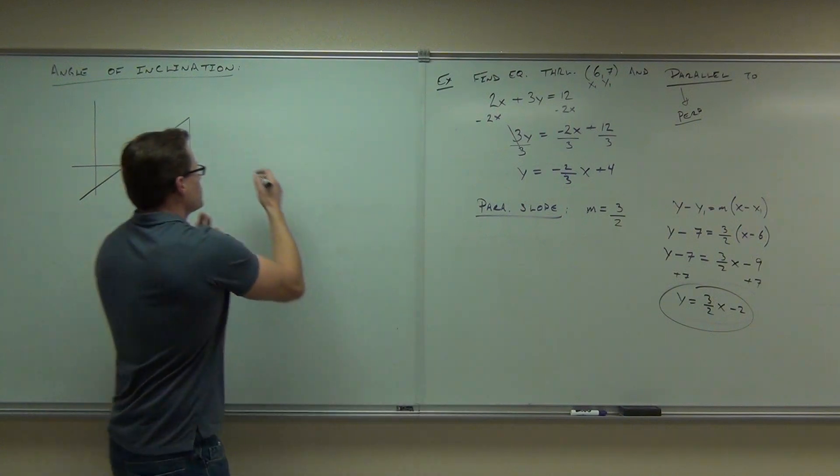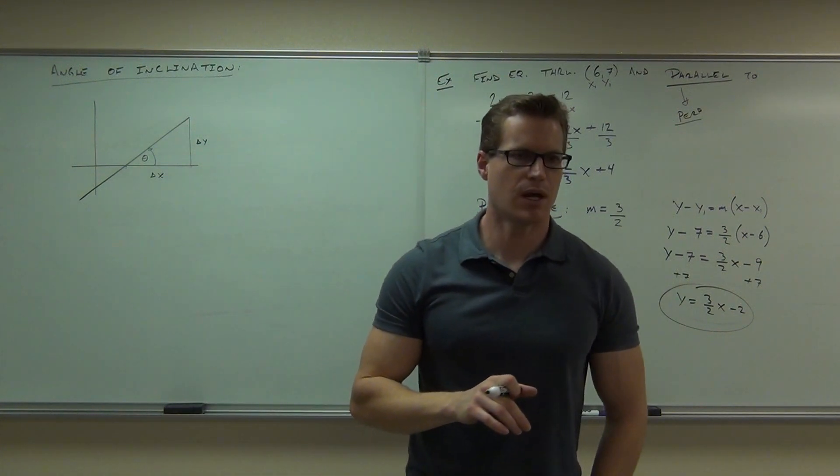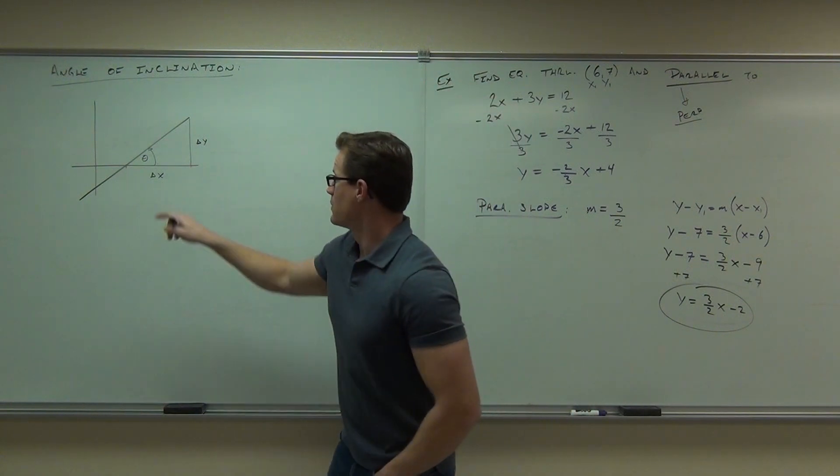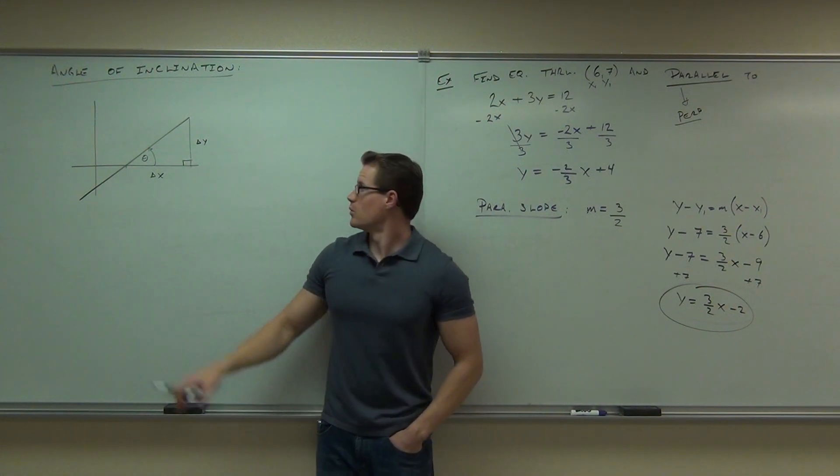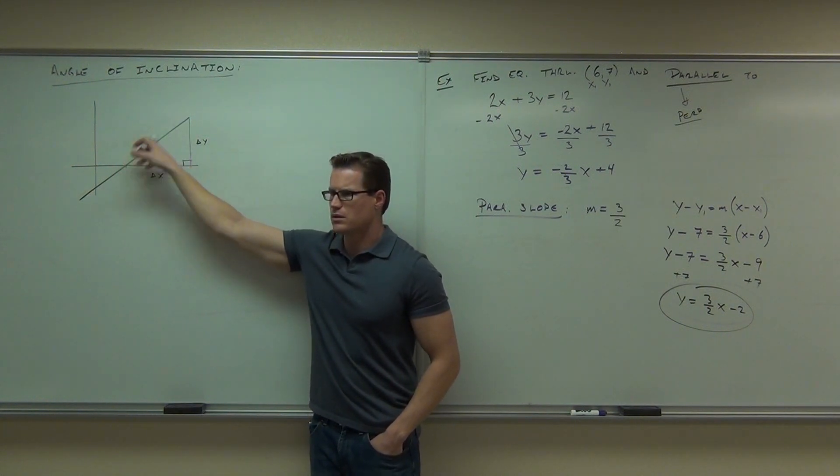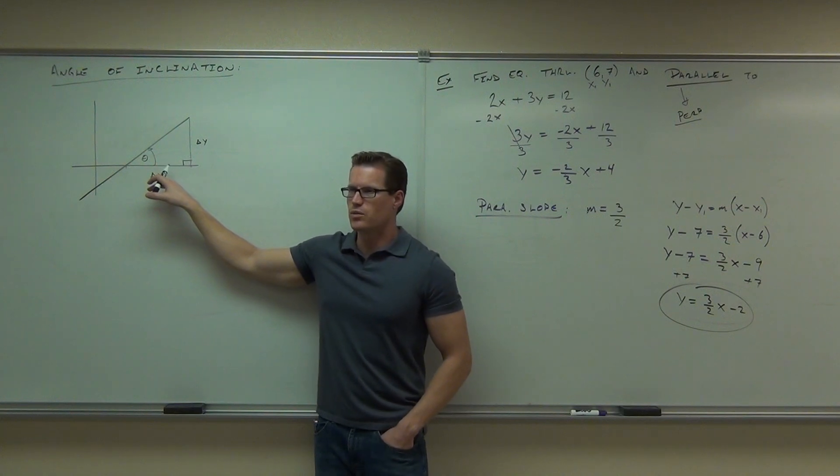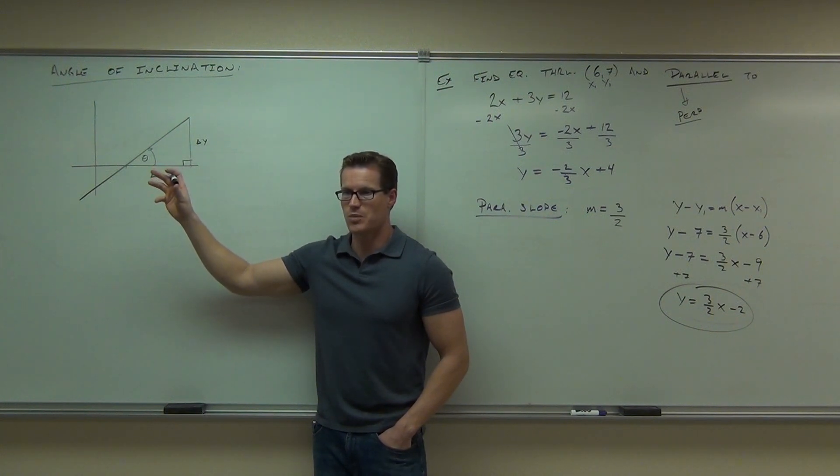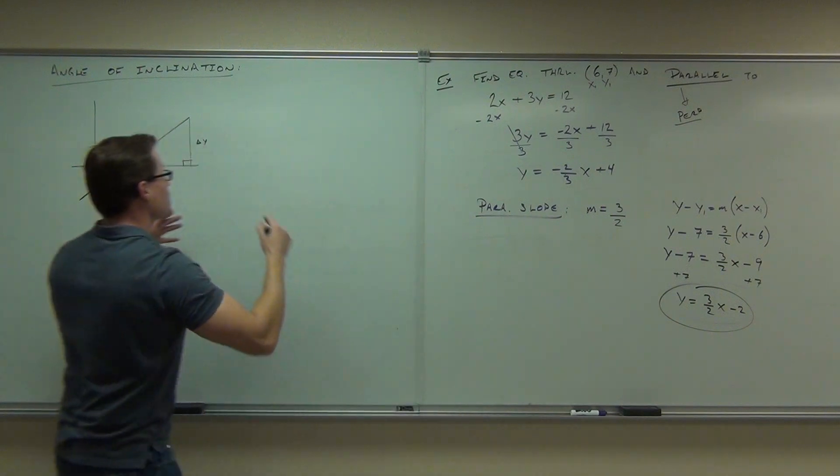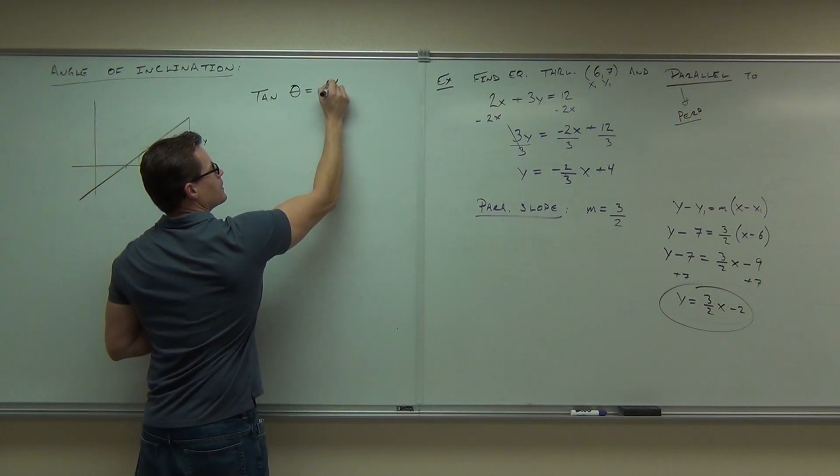We'll call it theta. We want to find some way to represent this line as having that angle. If we think about the x and the y-axis, notice that this we could represent as a change in x. You guys have seen that terminology before, the delta x change in x? And this would be the change in y. Now, think back to your trig days. This is just basic trigonometry. Is there a trig function that relates this angle and these two specific sides?